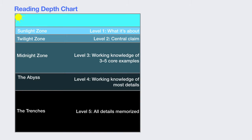The sunlight zone corresponds to level one: just knowing what the reading is about. The next level down is level two: knowing the central claim. Level three is a working knowledge of three to five core examples. Level four, the abyss, is working knowledge of most details. And level five, the trenches, is all details memorized.